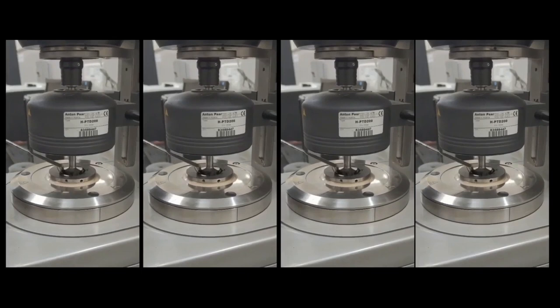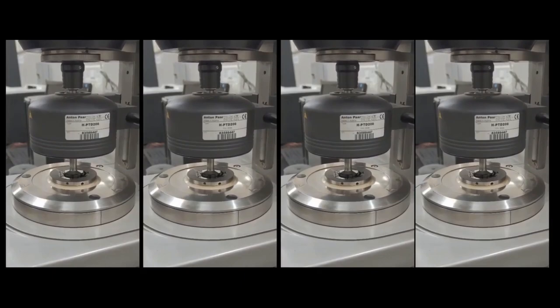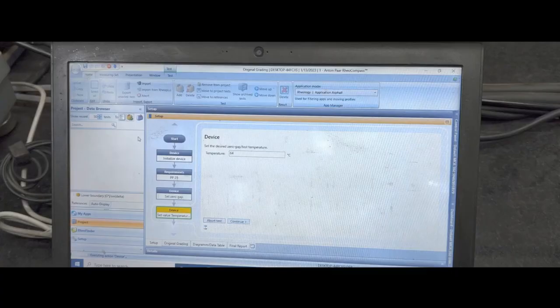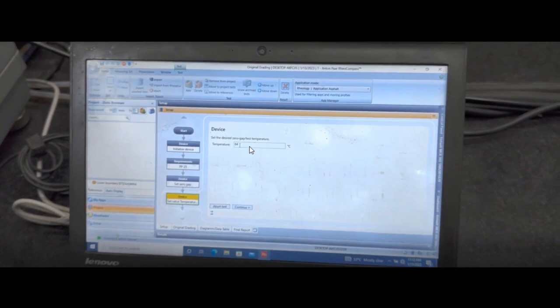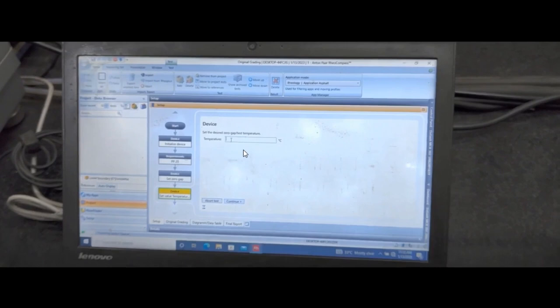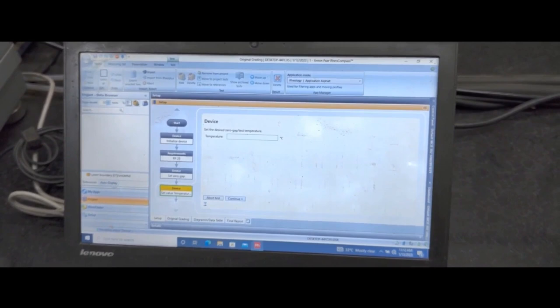Now through this software you can define the testing temperature. Test temperature can be 64, you can choose 70, you can also choose 74, any temperature you can choose depending upon the grade of the binder, but it should not be more than 100 degrees Celsius.